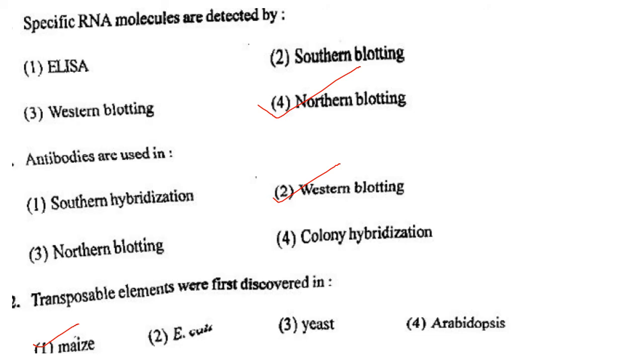Next one: Specific RNA molecules are detected by option 1, ELISA; option 2, Southern blotting; option 3, Western blotting; option 4, Northern blotting. Answer is option 4: Northern blotting.